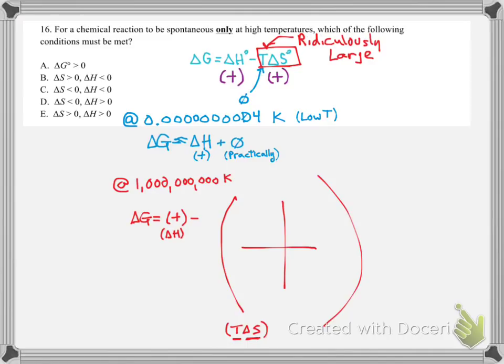Since delta S is positive, if the temperature is a massive temperature, we're going to have a massive positive number to subtract. And whenever you have a positive number, like delta H, minus a much more positive number, you're going to get a negative. So at really high temperatures, delta G would be negative, which would be spontaneous. Now, what's the cutoff between a high temperature and a low temperature? That varies for any given reaction. In order to answer that, we would need more quantitative data. But a reaction that is spontaneous only at high temperatures and not at low temperatures has a positive entropy and a positive enthalpy. So it's going to be choice E.